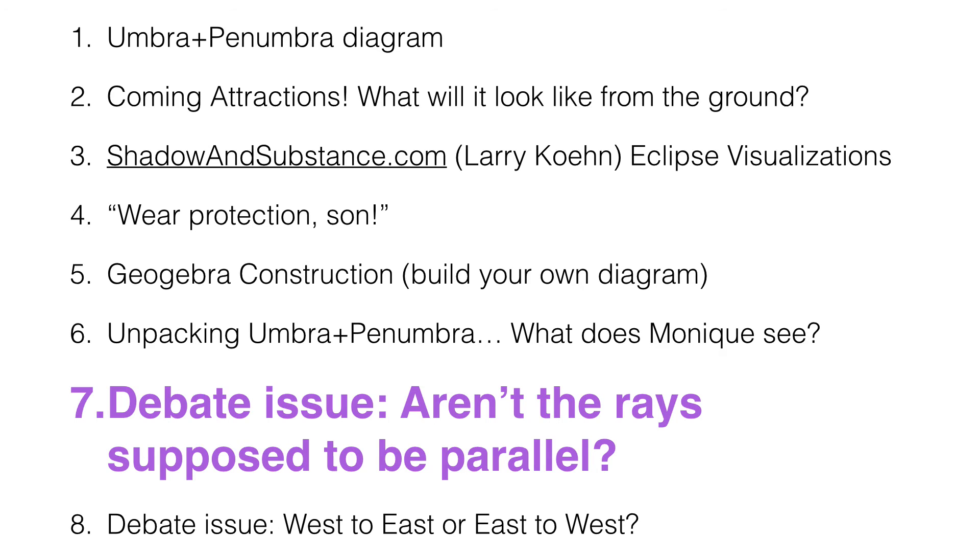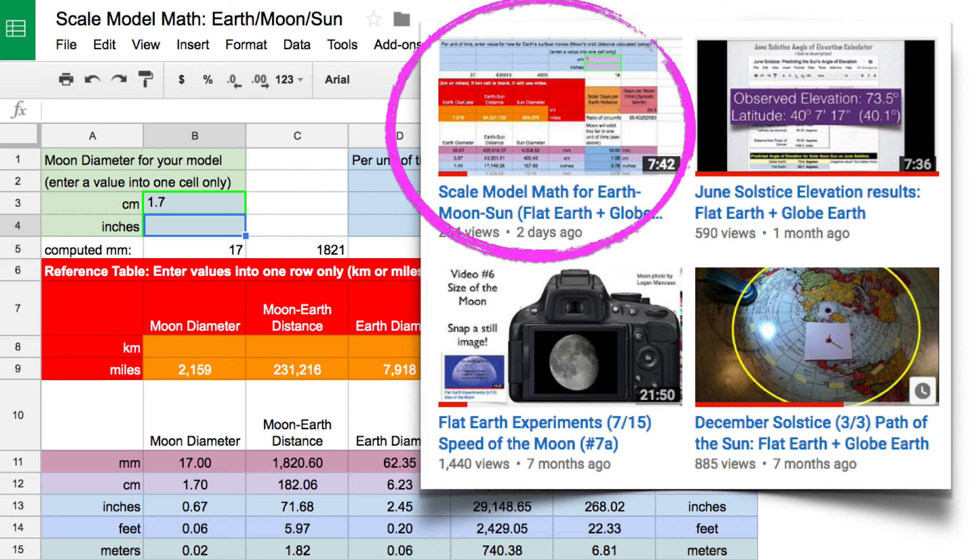The first is, aren't the sun's rays supposed to be parallel? This is actually a very good point. Because when you look at the umbra and penumbra diagram, those lines do not look parallel. So what we need to do is create a scale model. And I have created a video that's on my channel. It's called Scale Model Math for the Earth, Moon, and Sun.